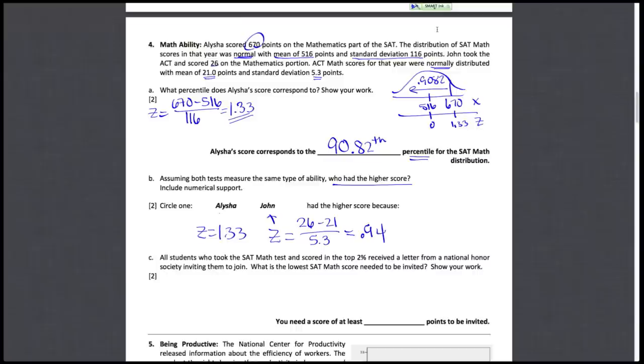He's at a lower percentile. So the person who did score higher relative to their distribution of scores is Alicia.